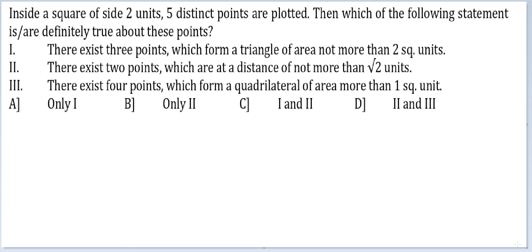Looking at the first statement, there exist 3 points which form a triangle of area not more than 2 square units. I am taking 5 distinct random points, but does it mean that it will definitely form a triangle?